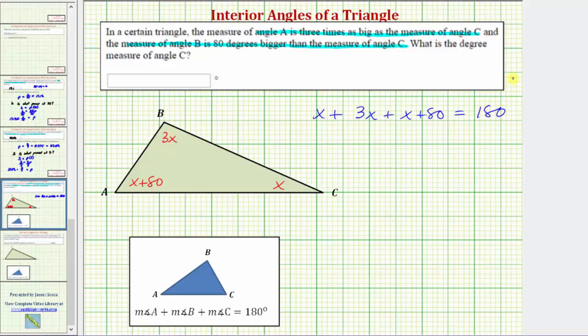The next step we'll combine the like terms on the left side of the equation. x plus 3x plus x is 5x, or if we want, 1x plus 3x plus 1x is 5x. So we have the equation 5x plus 80 equals 180.